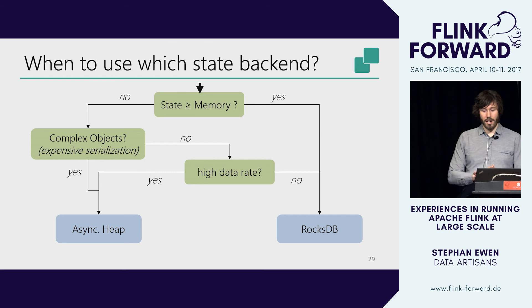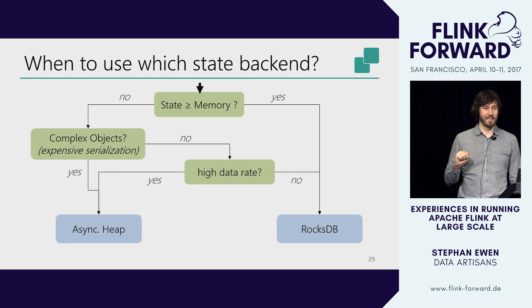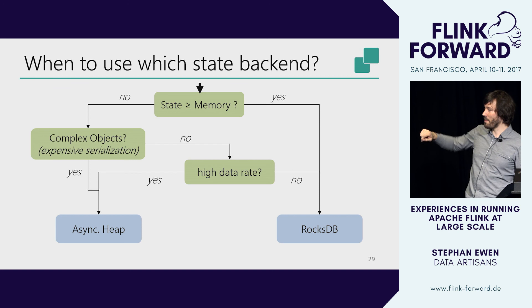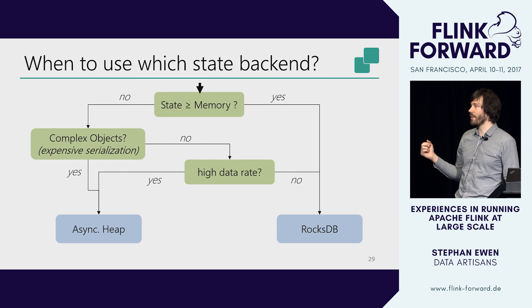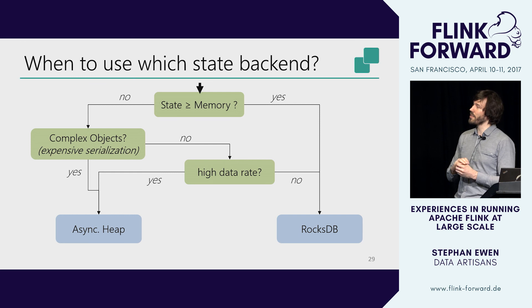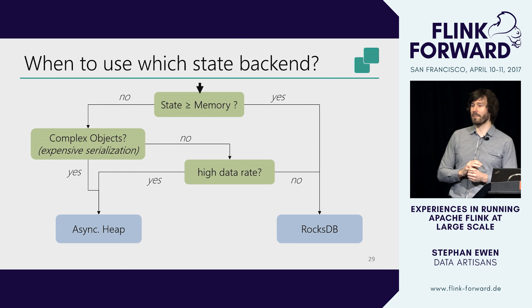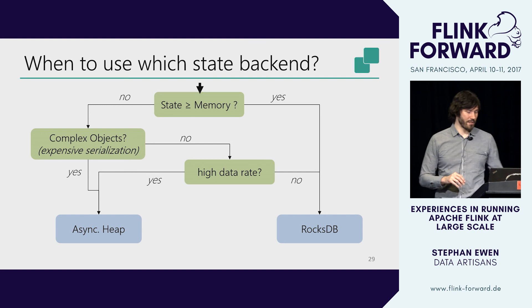A quick mini flowchart for choosing a state backend in Flink based on what we've seen: if your state is larger than memory, it's a no-brainer — go to RocksDB. If state fits in memory, ask yourself what kind of objects you're using. If they're complex objects like nested structures or bit vectors that are expensive to serialize, consider the asynchronous heap state backend. If serialization isn't an issue, look at your data rate: low data rate, RocksDB is fine; high data rate where you care about optimizing single-node performance, go with the asynchronous heap backend.